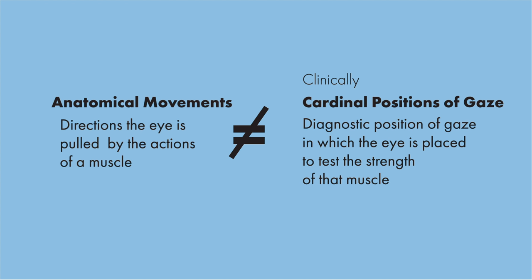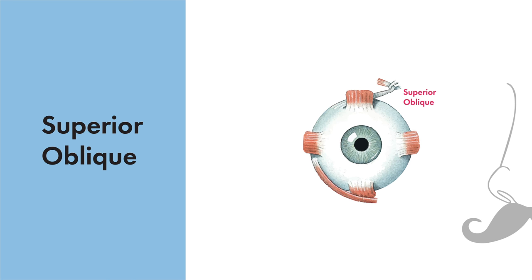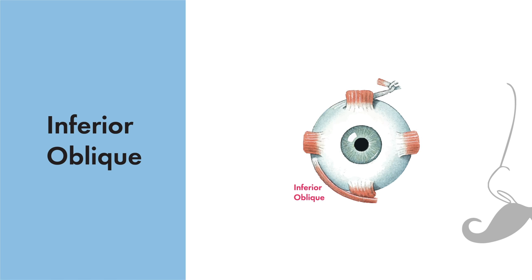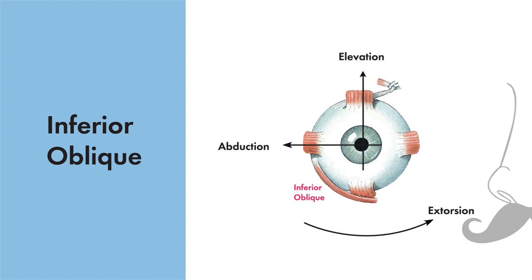So let's go through this. The superior oblique has a primary action of intorsion, a secondary action of depression, and a tertiary action of abduction, resulting in a movement that is down and out. The inferior oblique has a primary action of extorsion, a secondary action of elevation, and a tertiary action of abduction, which results in a movement that is up and out.